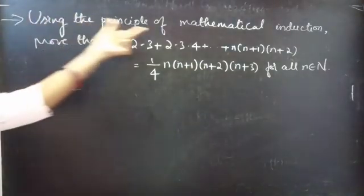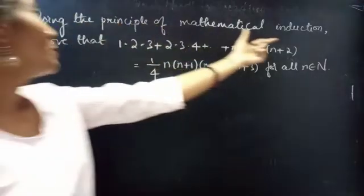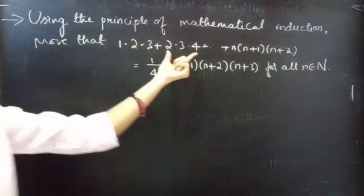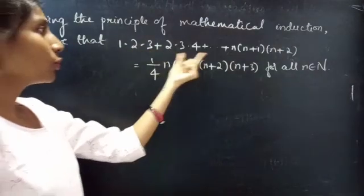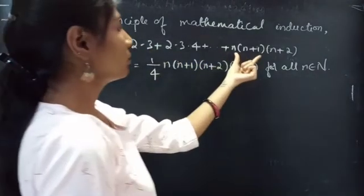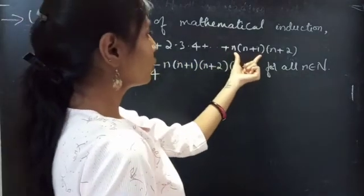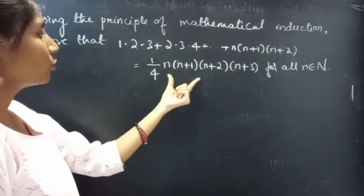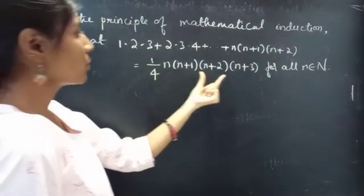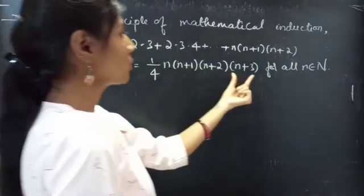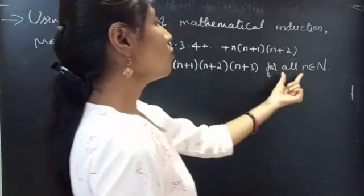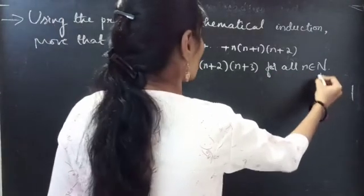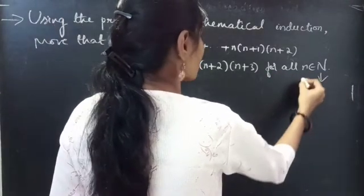Problem: using the principle of mathematical induction, prove that 1·2·3 + 2·3·4 + ... + n(n+1)(n+2) equals (1/4)·n(n+1)(n+2)(n+3), for all n belonging to natural numbers.